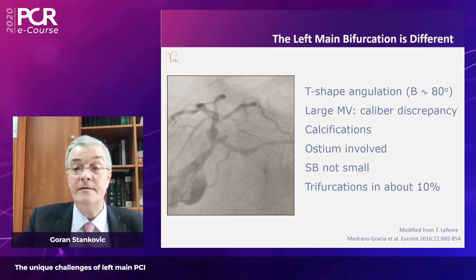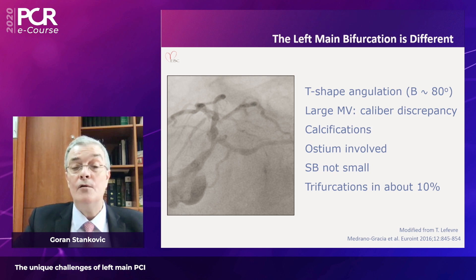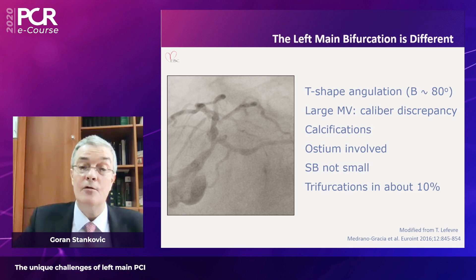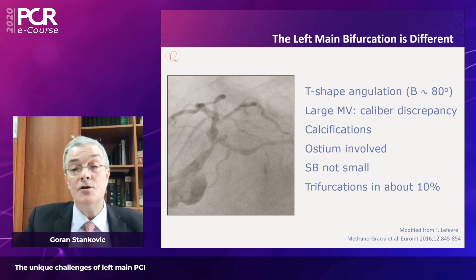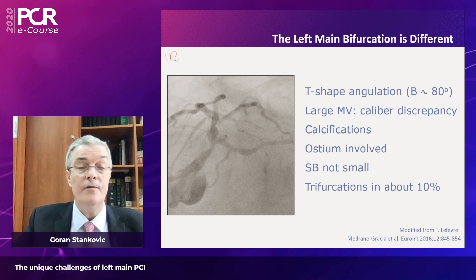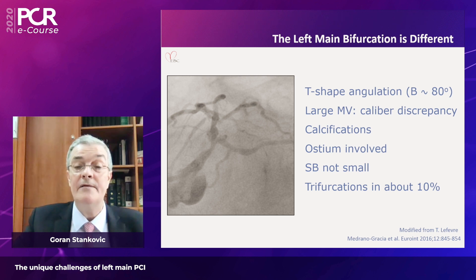The left main bifurcation area is also prone to calcium deposition, so we frequently have a calcified bifurcation. When the ostium of the left main is involved, there is a lot of fibrotic tissue, and contact between the guiding catheter and the stem increases procedural complexity. Additionally, the side branch is not small — it is the circumflex — and according to flow simulation and CT, in 95% of cases the circumflex supplies more than 10% of myocardium of the left ventricle, making it almost always clinically relevant.